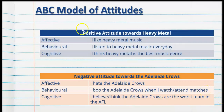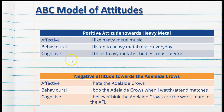Let's put it all together. For a positive attitude towards heavy metal: affective — I like heavy metal music; behavioural — I listen to heavy metal music every day; cognitive — I think heavy metal music is the best music genre. For a negative attitude towards the Adelaide Crows: affective — I dislike or hate the Adelaide Crows; behavioural — I boo the Adelaide Crows when I watch them or attend matches; cognitive — I believe the Adelaide Crows are the worst team in the AFL. It's important to remember that for a completed attitude, all three aspects must be present: affective, behavioural and cognitive.